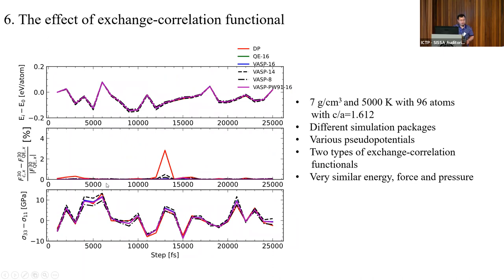This slide addresses a personal interest: whether discrepancies in the literature are caused by different simulation packages or different exchange-correlation functionals. We reuse previous snapshots and redo DFT simulations with different packages. Since different packages use different zero energies, we measure internal energy differences between the first and subsequent configurations. The results show that different simulation packages and exchange-correlation functionals give very similar or identical energy differences, indicating that simulations with VASP will give essentially the same phase diagram for iron as simulations with other codes. So any large discrepancy between studies must be caused by something other than the simulation software itself.